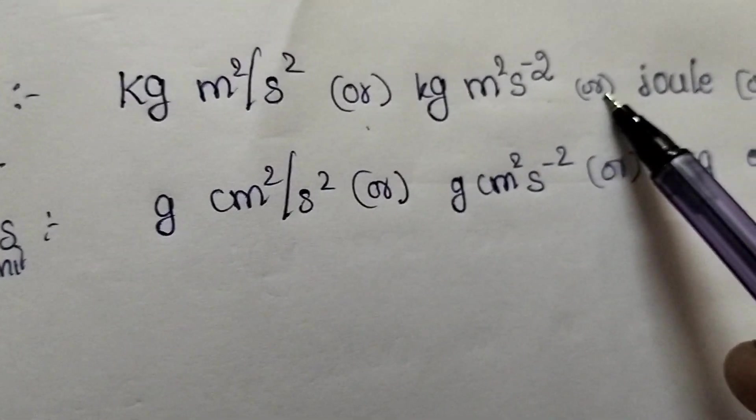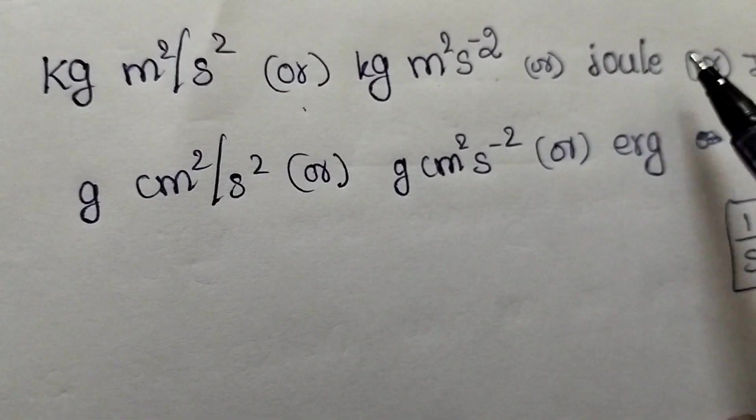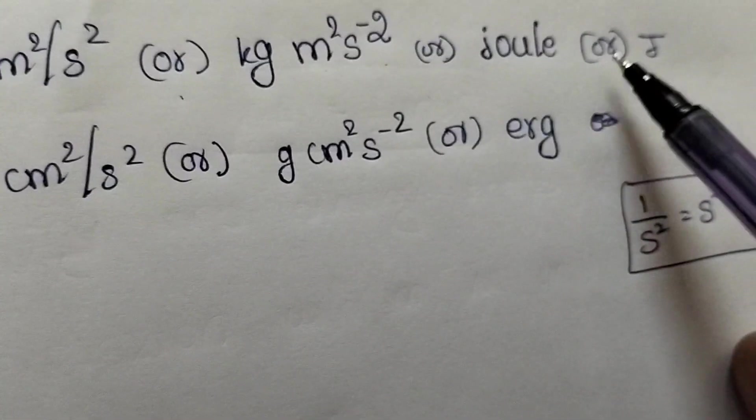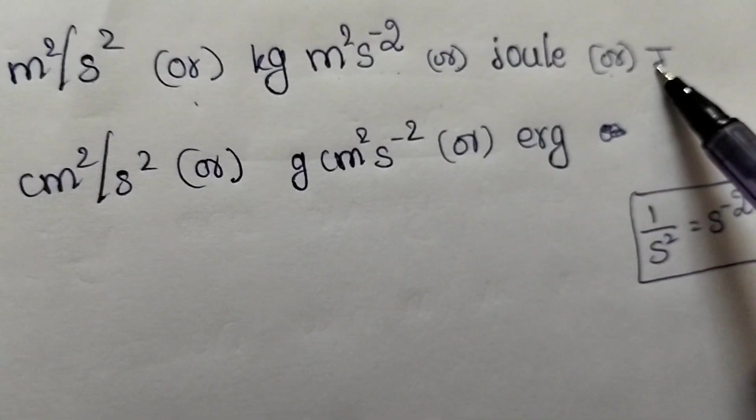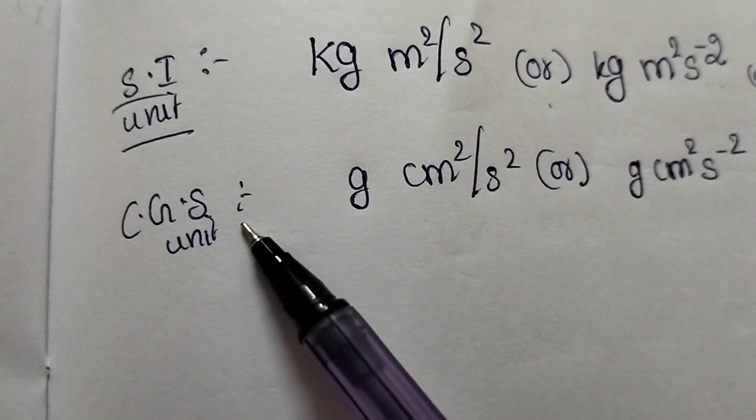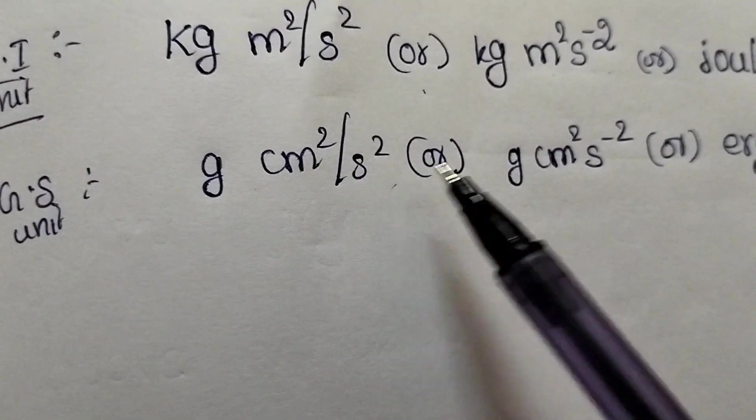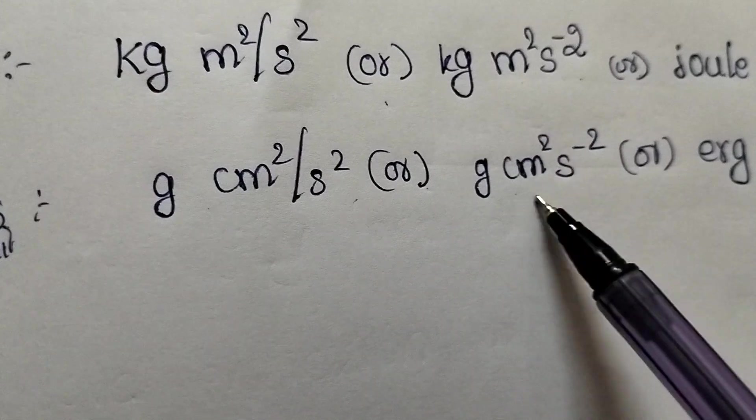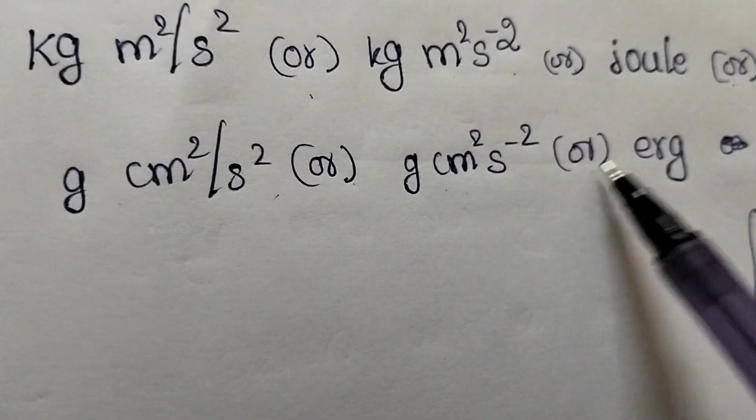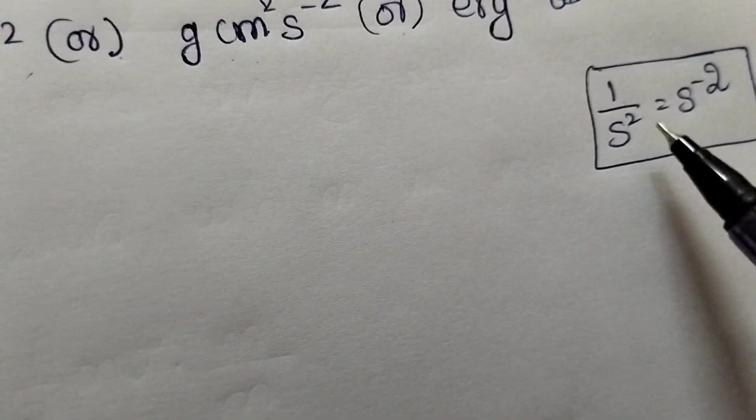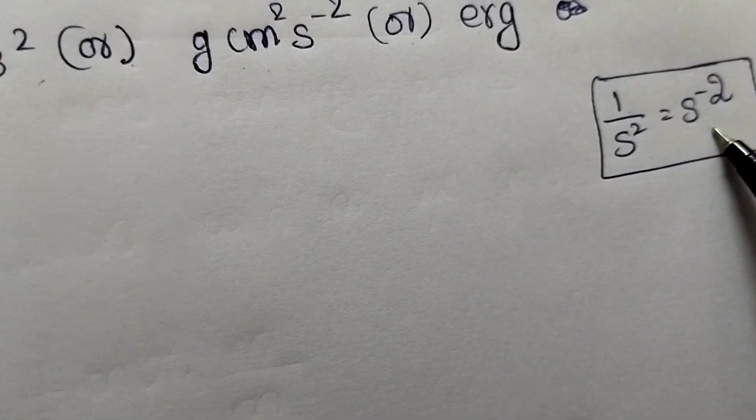Or it can be written as joule. In CGS, gram centimeter square per second square, or gram centimeter square S to the minus 2, or erg. See that 1 by S square can be written as S power minus 2.